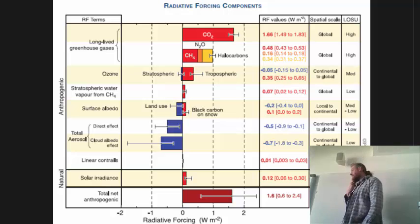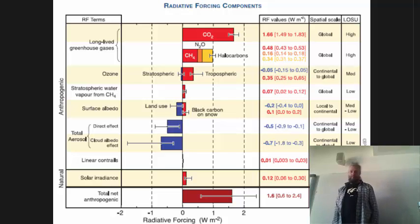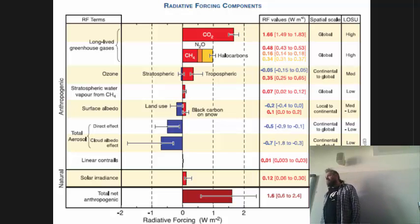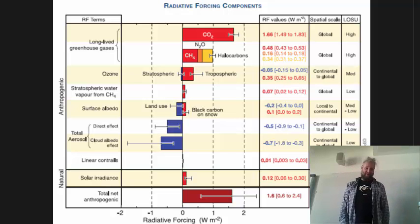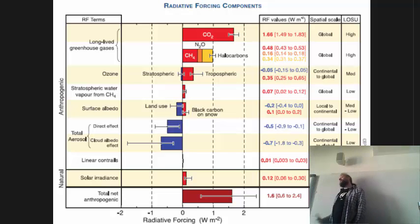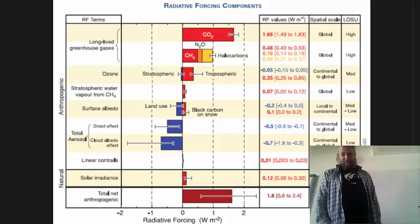I showed this one yesterday. This is all the changes that we've made to the energy balance of the planet since pre-industrial times. If the past is so complex, then you can expect the future to have similar complexity. Whenever we're doing emissions scenarios or climate scenarios for the future, you need to have CO2, methane, halocarbons, ozone precursors, aerosols, land use changes, and so on.